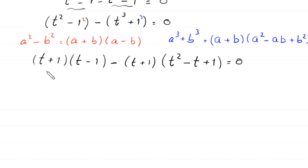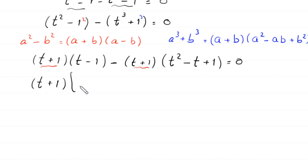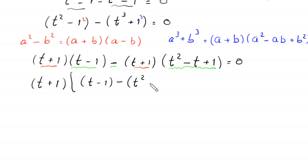As you can see, the expression (t plus 1) is a common factor. So we factor out (t plus 1) and inside the bracket we are left with: (t minus 1) minus (t squared minus t plus 1) equals 0.